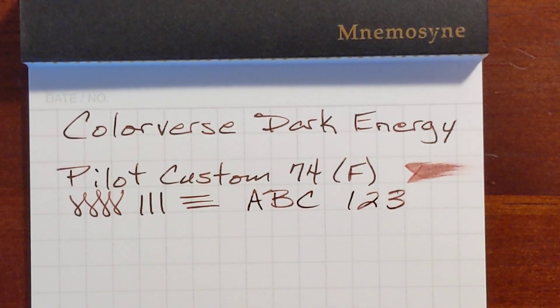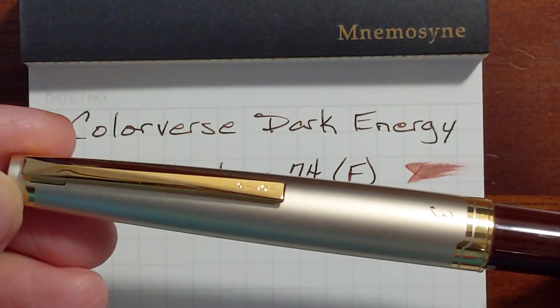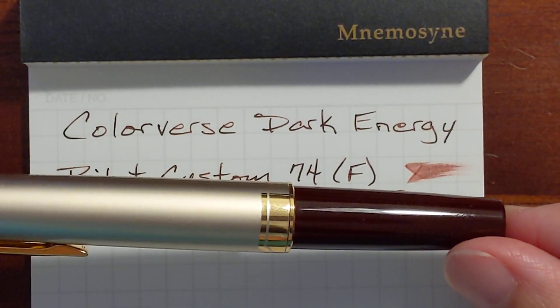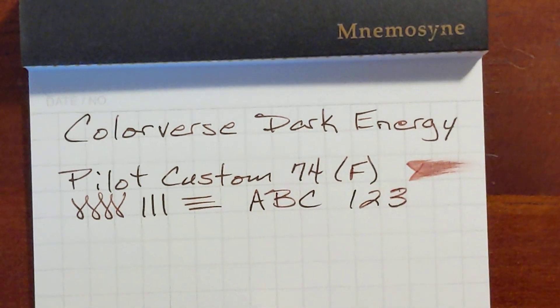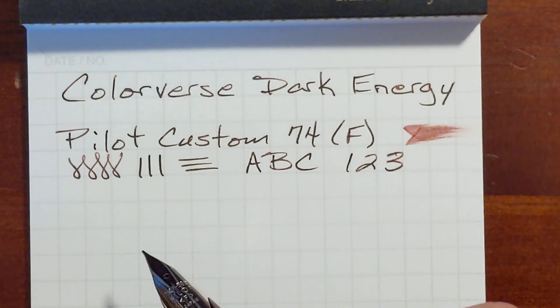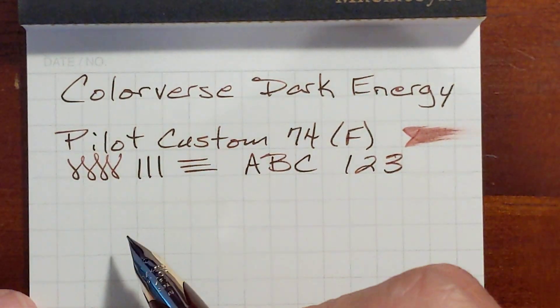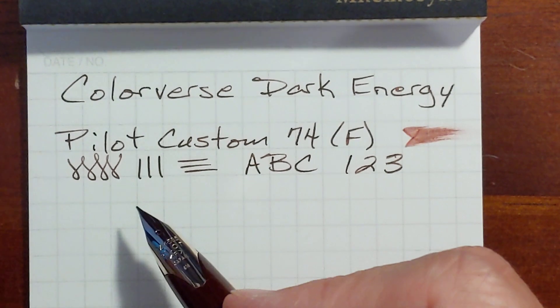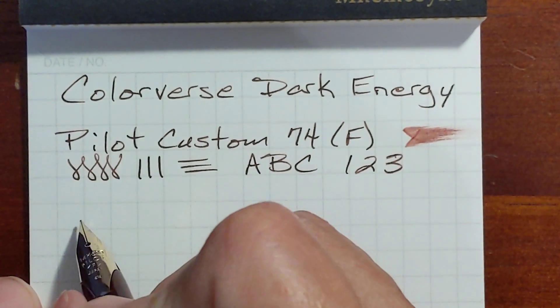And next is my Pilot E95S. It's kind of matchy matchy with this ink. The last thing I used in my E95S was Iroshizuku Olive Green or Iroshizuku Uguisu and it didn't match this pen at all and I loved it, but this is a nice match.